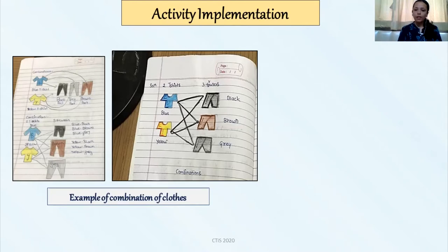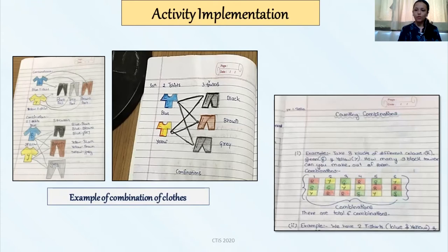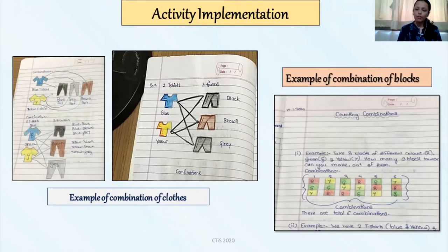Then we went ahead with the example of combination of blocks. This example was also present in CS Pathshala curriculum. The slides and the content was very much useful. The students were able to draw different colored blocks and they need to put it on one tower. How many different towers will you be able to create from the given three different blocks? The answer was 6 and the students were able to solve this example correctly.